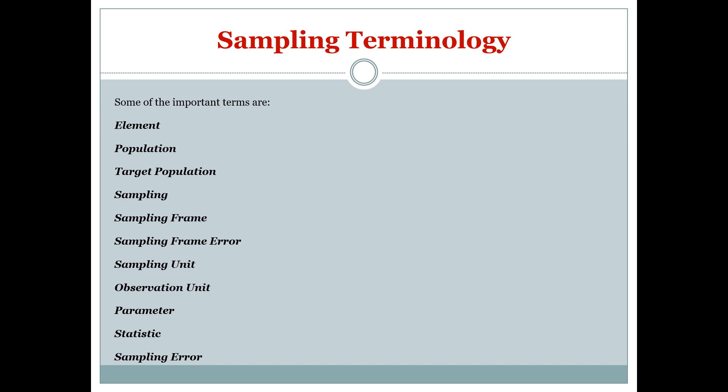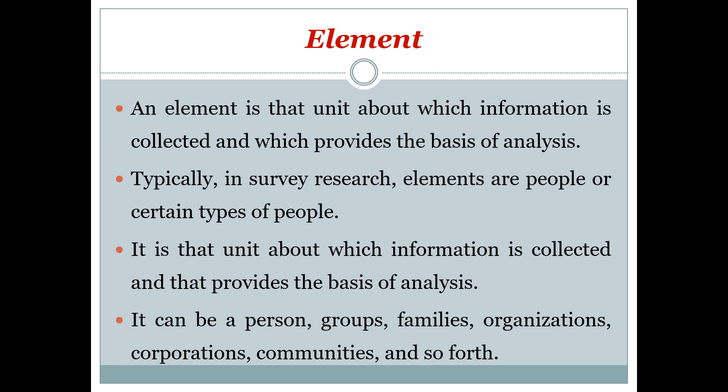There are common terminologies used in sampling: element, population, target population, sampling, sampling frame, sampling frame error, sampling unit, observation unit, parameter, statistics, and sampling error. An element is the unit about which information is collected and which provides the basis of analysis.